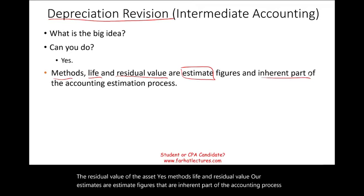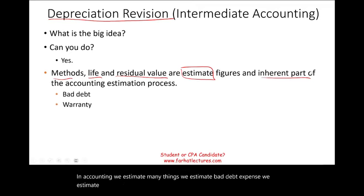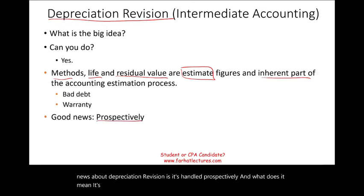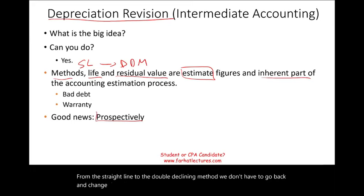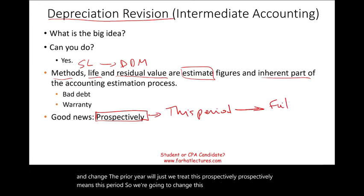In accounting, we estimate many things: bad debt expense, warranty, and losses. That's a part of accounting. The good news about depreciation revision is it's handled prospectively. What does it mean to be handled prospectively? If we change from straight-line to the double-declining method, we don't have to go back and change prior years. We treat this prospectively — meaning this period and future periods.